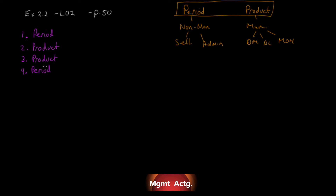You learn even more when you do the exercises. Number five: soap and paper towels used by the factory workers at the end of the shift. It's in the factory, supporting the factory workers, so it is a product cost — manufacturing overhead, though we only need to classify it as product, not go any deeper.